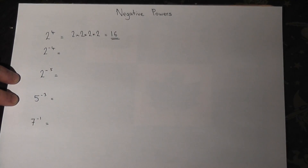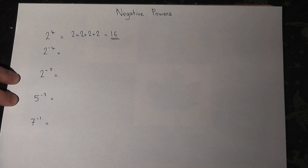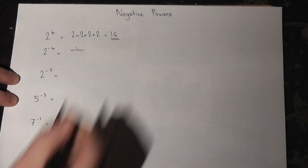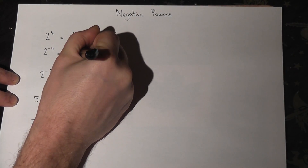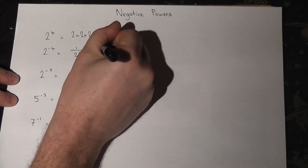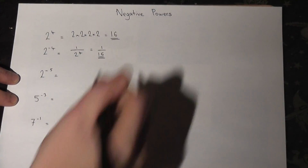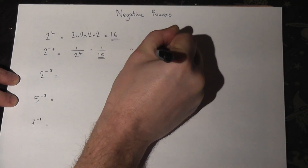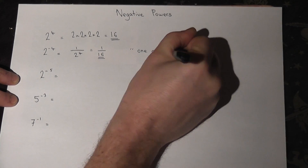Now we won't prove it in this video, but a negative power just means one thing — it just means 1 over. So 2 to the power of negative 4 means 1 over 2 to the power of 4, and we know that 2 to the power of 4 is 16, so it's a fraction, and it just means 1/16. So a negative power always means 1 over.